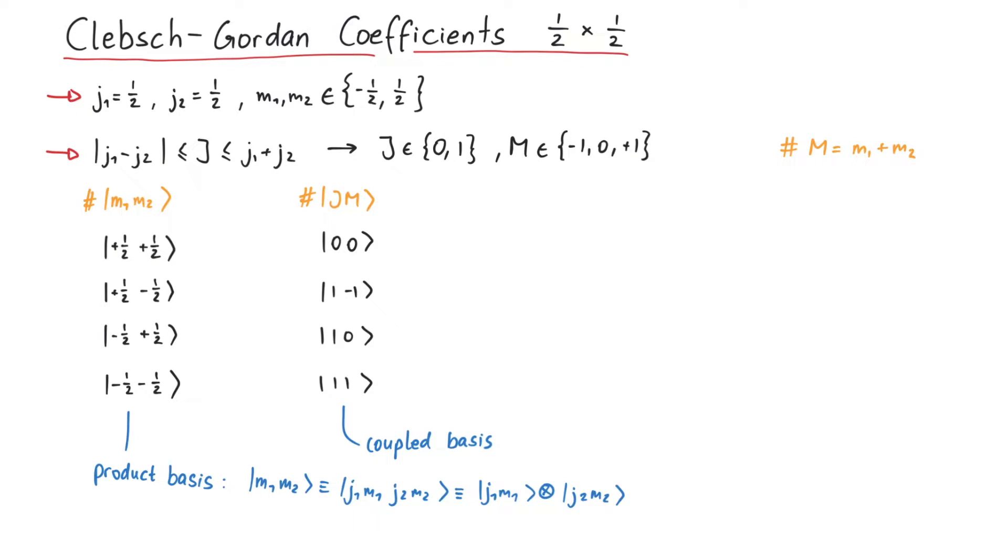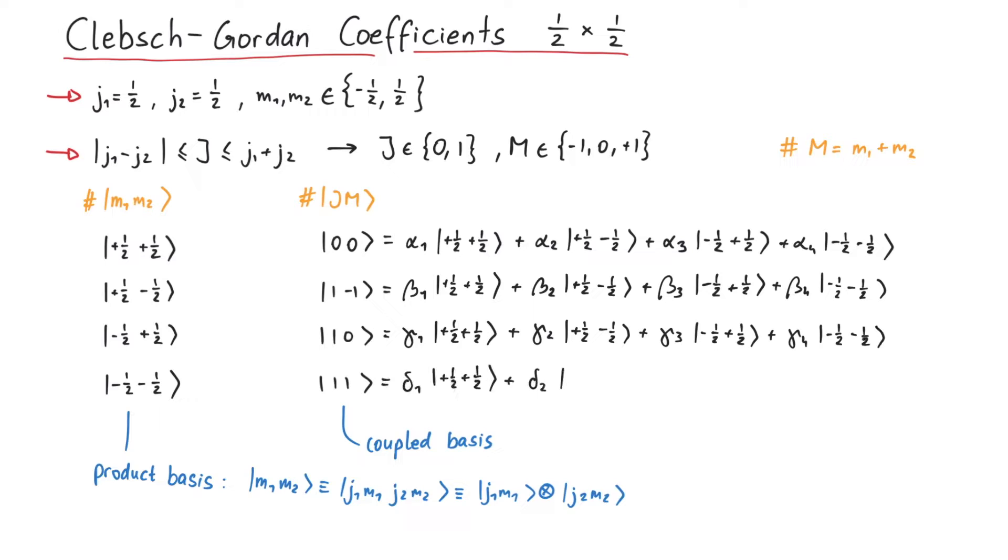The four states on the left and the four states on the right correspond to the same system, the same degrees of freedom. So it must be possible to mathematically write one of those sets in terms of the other. This means we must be able to write the coupled states as a linear combination of the product states. And those 16 coefficients are precisely the Clebsch-Gordan coefficients that we are looking for. Before we get into too much detail, there are some steps we can take to reduce the number of coefficients.